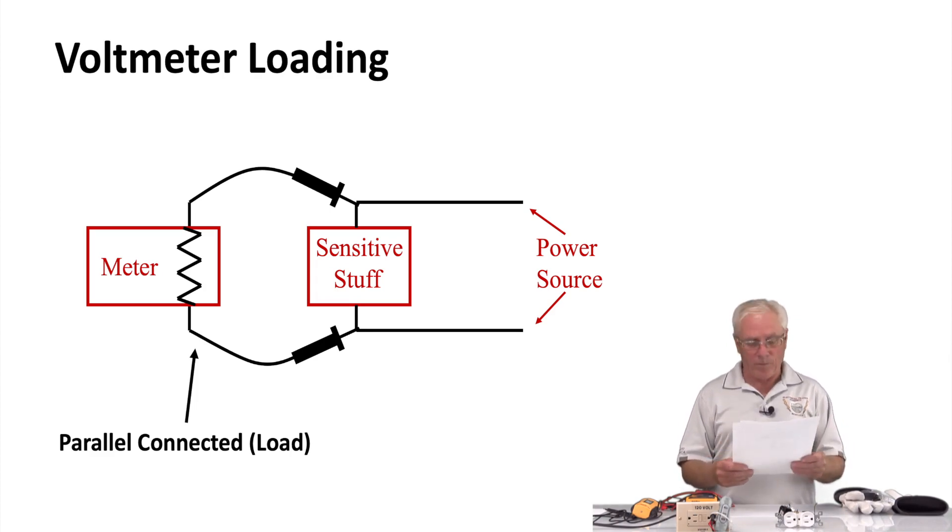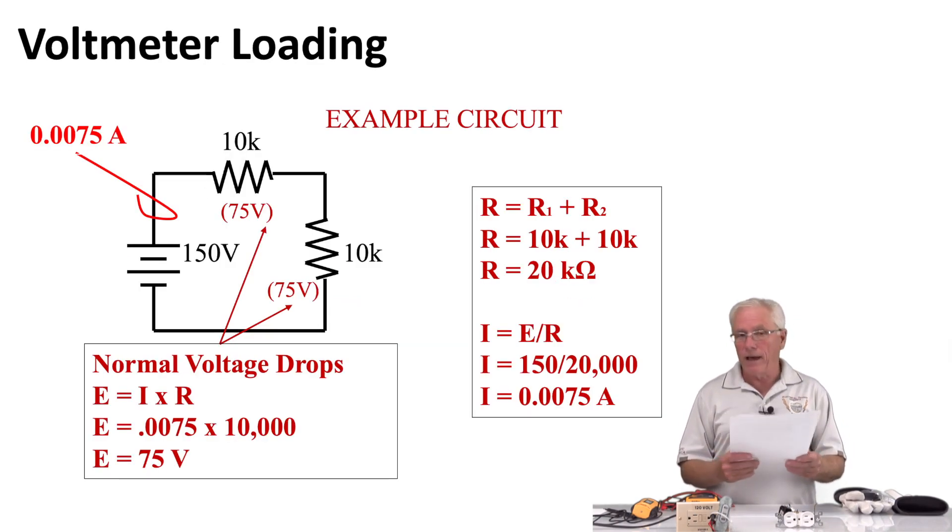The next slide will pop up showing a circuit example that I put together. If you look at the circuit drawn, you'll see I have 150 volts supplied from a battery, and I have two resistors connected in series, both of them are 10k. Looking over to the right, you'll see I have a box showing the resistance, and R total is equal to R1 plus R2, so R is equal to 10k plus 10k, which will yield us 20 kiloohms of resistance.